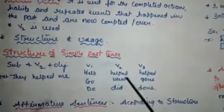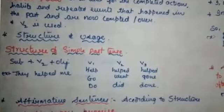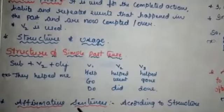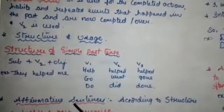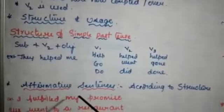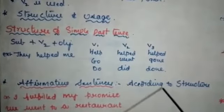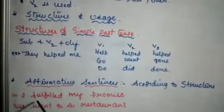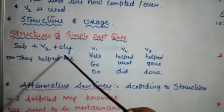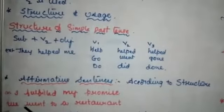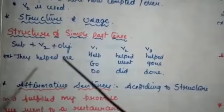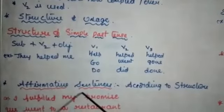As usual, we will discuss three types of sentences in simple past: affirmative sentences, negative sentences, and interrogative sentences. Affirmative sentences are positive sentences according to the structure. For example: 'I fulfilled my promise' — 'I' subject, 'fulfilled' V2, 'my promise' object. Another example: 'We went to a restaurant' — 'we' subject, 'went' V2, 'to a restaurant' object. These are called affirmative sentences.